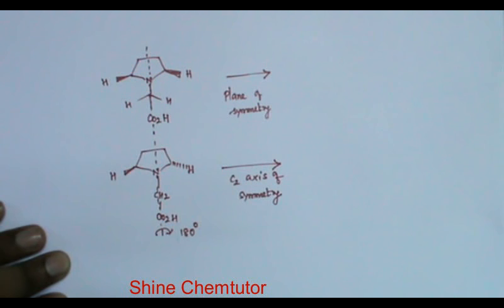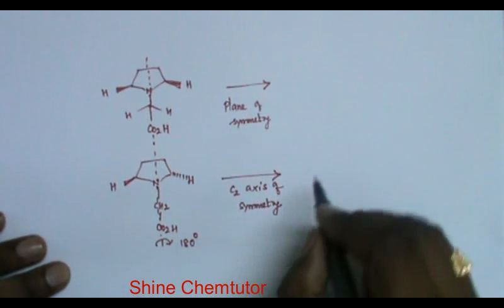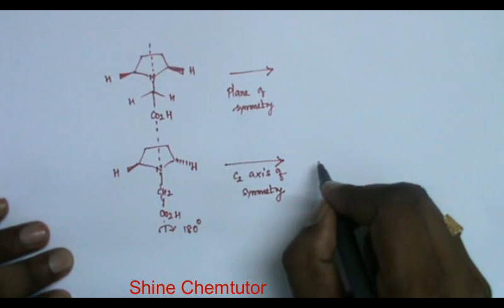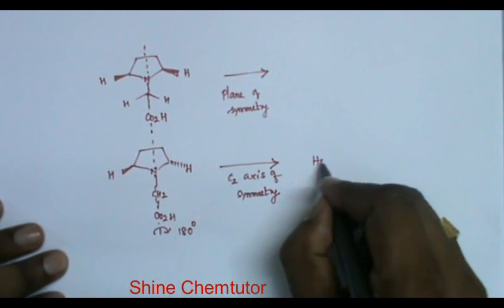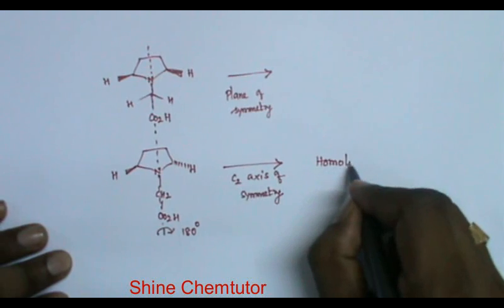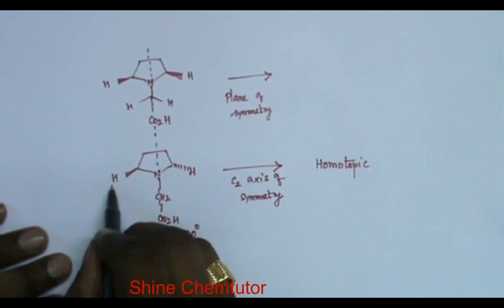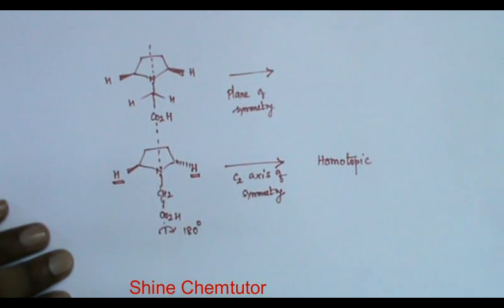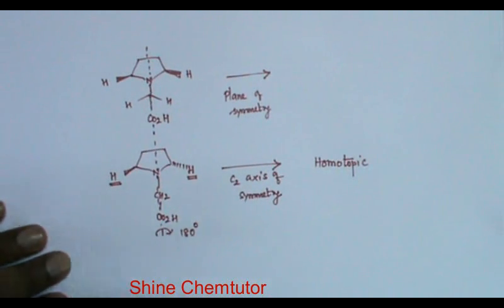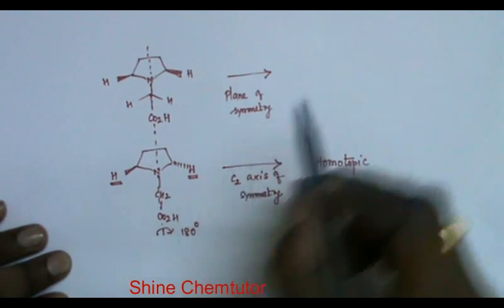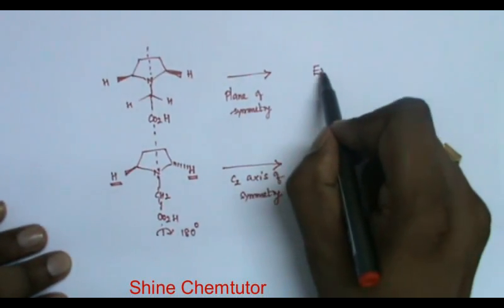If the molecule has a C2 axis of symmetry, then the two groups or hydrogen atoms are homotopic. Basically, these two hydrogens will be homotopic. If the molecule has a plane of symmetry, then the two hydrogens, whatever you compare, will be enantiotopic.